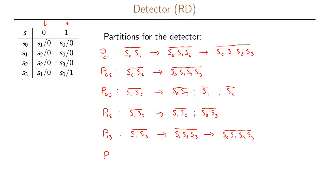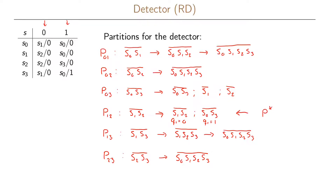Finally, for partition p23 we start with s2 and s3. From the state transition table, we want s1 and s2 in the same partition and s0 and s3 in the same partition, which immediately gives us all states in one partition. The only useful partition is p12. For p12 we can say that for the partition {s1, s2}, q1 equals 0, and for the partition {s0, s3}, q1 equals 1. For q2 we make an additional partition with s0 and s1 where q2 equals 0 and s2 and s3 where q2 equals 1.